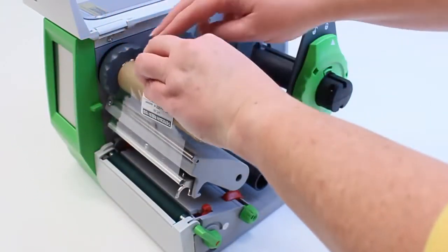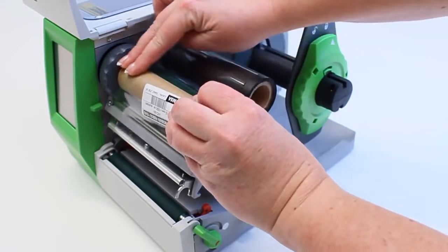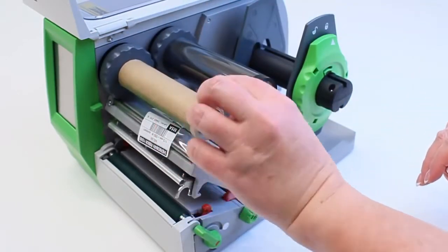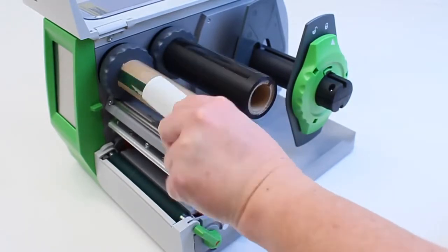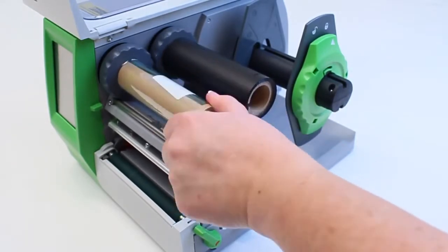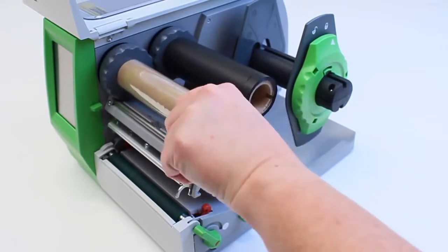Secure the plastic to the take-up core. Again, if you're not using a brand new ribbon, a piece of tape can be used. Then rotate the front take-up core counterclockwise until the clear plastic can no longer be seen and the ribbon is tight with no wrinkles.